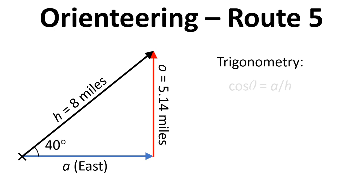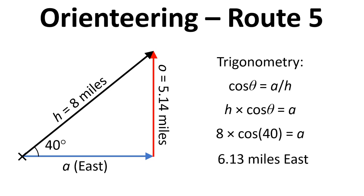Another way we could do this is through trigonometry. And we could use cos theta equals a divided by h. Multiply both sides by h to give h times cos theta equals a. If we put some numbers into this, again we get 6.13 miles east.